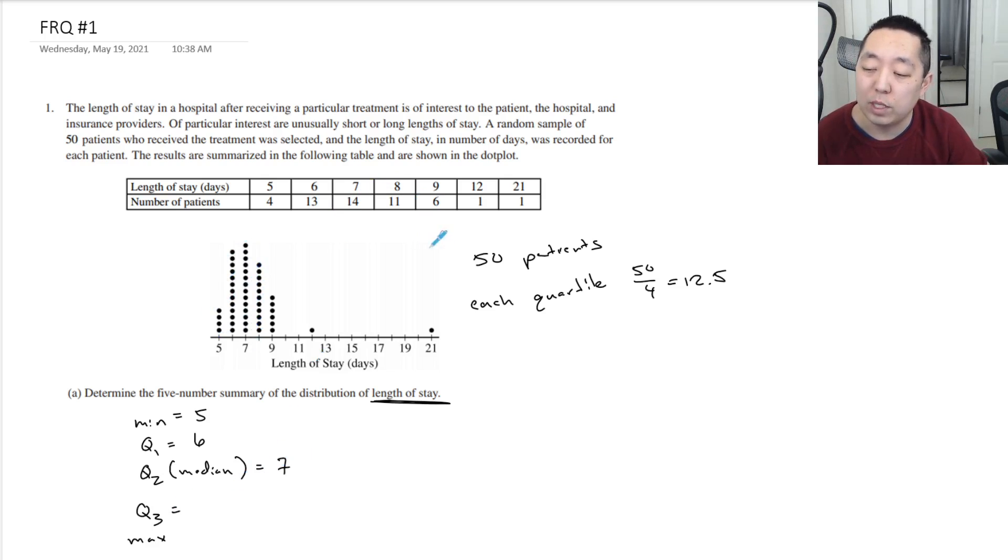The Q3 is going to be 12.5 people from the very top, so if you think 1, 2, 3, 4, 5, 6, 7, 8, 9, 10, 11, the 12 or 13 is going to be somewhere in here with the eight, and the maximum is 21. So that's our five-number summary.